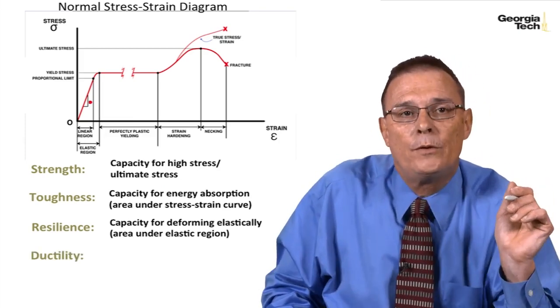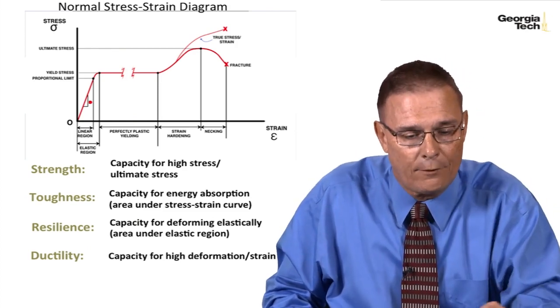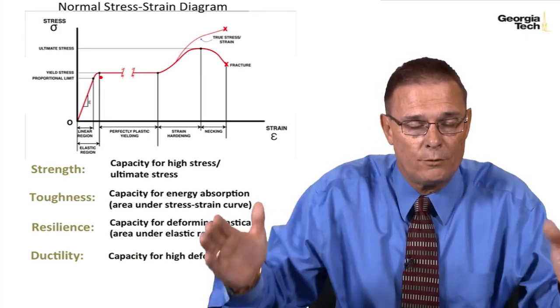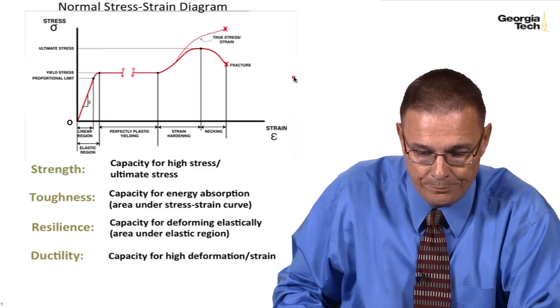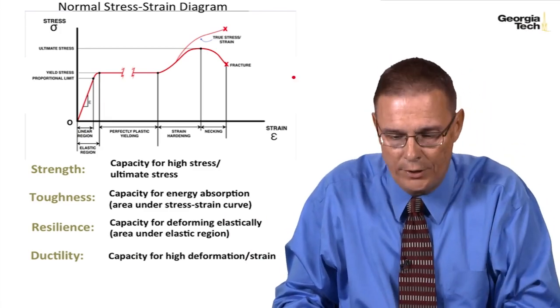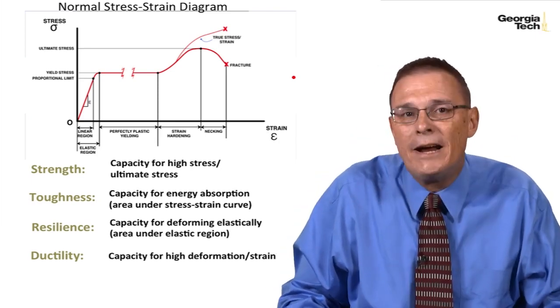And then we talk about ductility. We've talked about it quite a bit now. That's the capacity for high deformation or strain, and so that's when this stress-strain curve becomes very, very long. Lots of strain for very little increase in stress. And ductility, a lot of metals are very ductile—things like steel, aluminum, copper, maybe lead, brass, bronze.